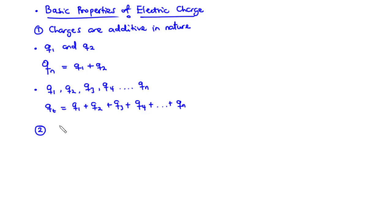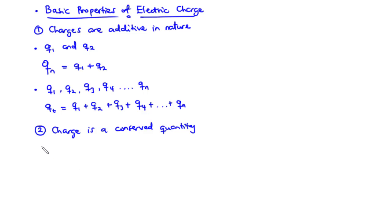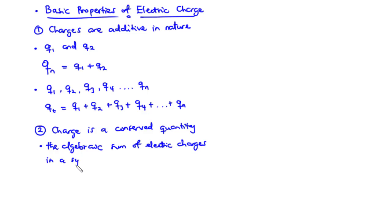Secondly, electric charge is a conserved quantity — charge can neither be created nor destroyed; it can only be transferred. Hence, the algebraic sum of electric charges in a system does not change.